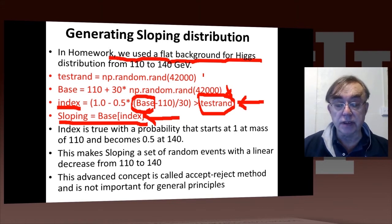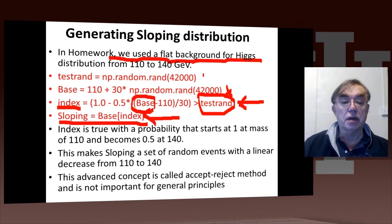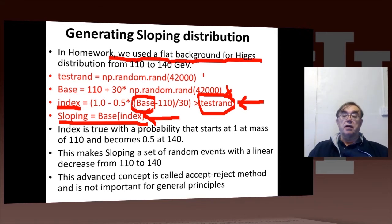And what does this condition have? What's its feature? Well, what's the chance that you would actually have this function 1 minus a half base minus 110 over 30 bigger than the random number? Well, this is a number between one and a half.